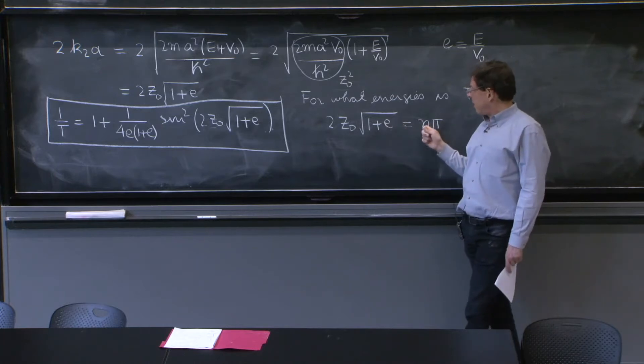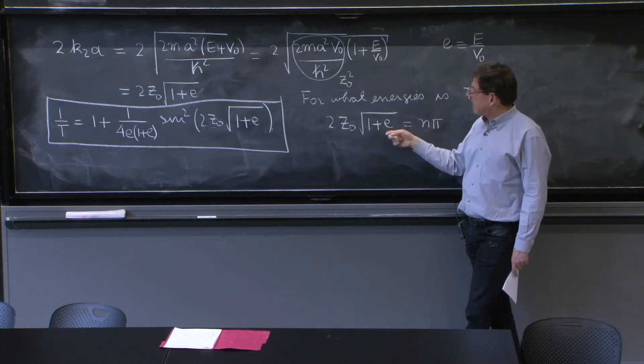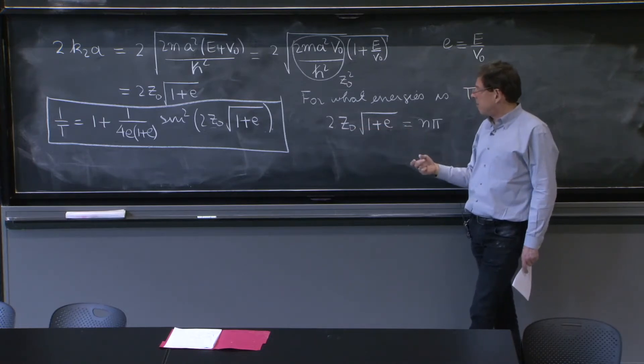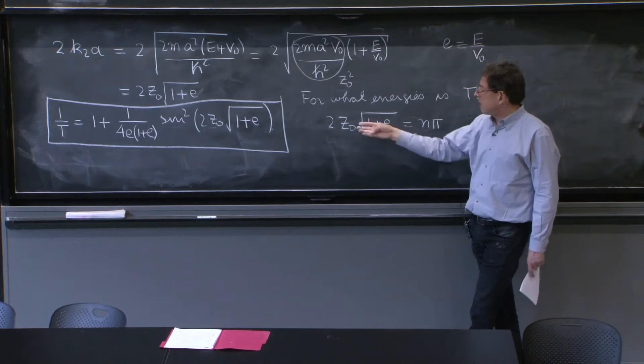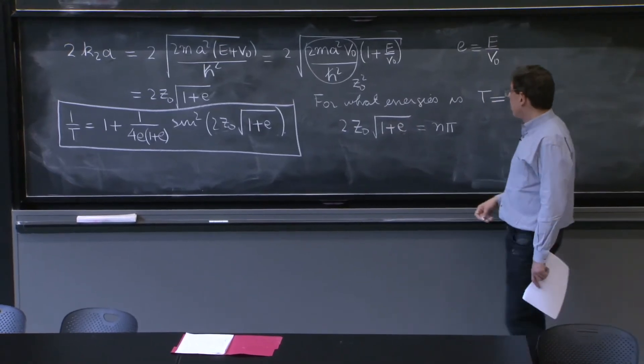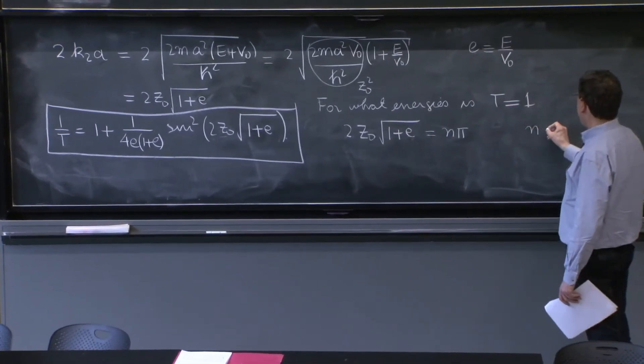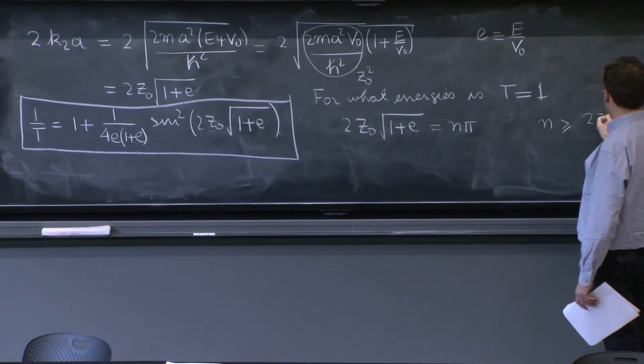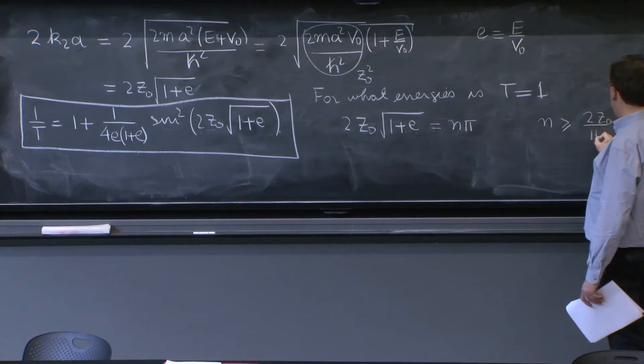So this number n must exceed some number, because this left-hand side never becomes very small. The smallest it can be is 2z0. So n must be greater than or equal to 2z0 over pi.